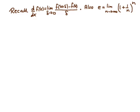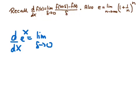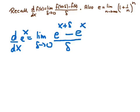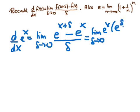We want the derivative with respect to x of e to the x, which is the limit as delta approaches 0. In the numerator we have e to the x plus delta minus e to the x, all divided by delta. Using the rules for powers, we see a common factor of e to the x, so we can write this as e to the x multiplying e to the delta minus 1, all divided by delta.